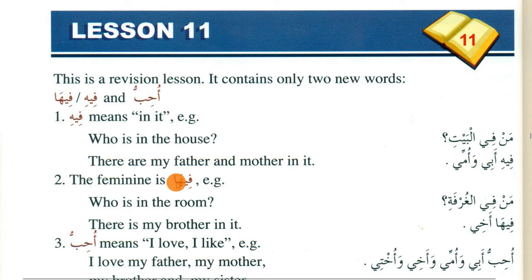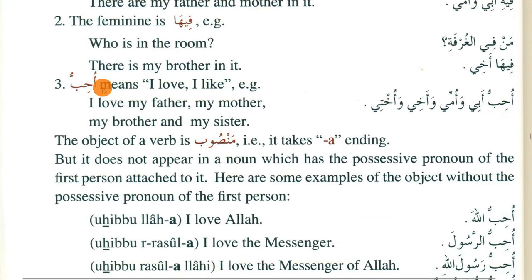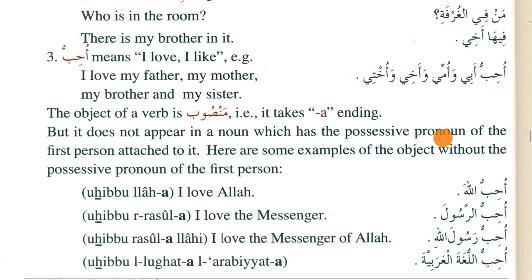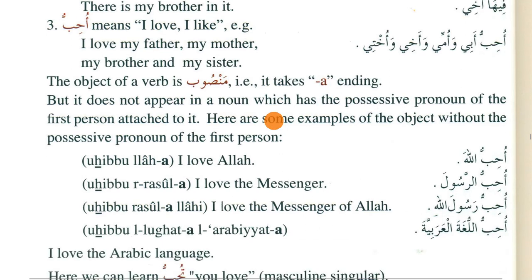Other than these two words, you just need to read for revision. The next word is 'ohibbu', meaning 'I love' or 'I like'. Ohibbu is a verb - a fi'l. The word that follows it will be the maf'ul bihi, the object of the sentence. As you know, the object of a verb is mansoob.